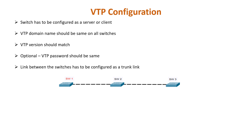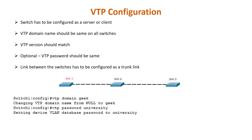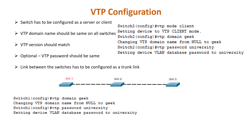Consider the following example. We have a network of three switches connected via trunk links. On switch 1, we will configure the VTP domain name using the 'vtp domain name' command and VTP password using the 'vtp password' command. The default VTP mode on Cisco switches is server mode, so the 'vtp mode server' command was not needed. Next, we need to configure switch 2 and switch 3 as VTP clients using the appropriate set of commands. The configuration on switch 3 looks similar to that of switch 2.